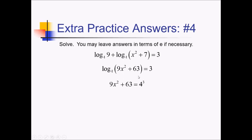4 to the third is really 64. Subtracting 63 from that, I've got just 1 over there. And then if I divide by 9, I've got x squared equals 1 ninth. At this point, I can square root both sides of the equation to get plus or minus 1 third. Are those answers both going to work? If I plug both of those back in, squaring them has the same effect because it gets rid of the sign. In both cases, I end up with a positive number inside this log. So both of these answers are good.